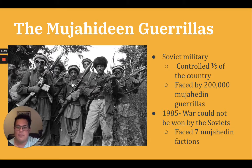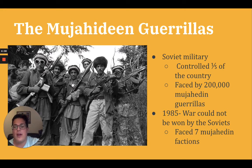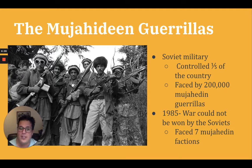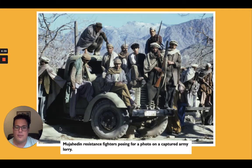The Mujahideen wished to establish an Islamic government for the country, giving rise to guerrilla groups trying to counter Soviet intervention. Faced by up to 2,100 Mujahideen guerrillas, the Soviet military controlled only one-fifth of the country. By 1985, it was clear that the war could not be won by the Soviets, as they faced seven different Mujahideen factions with headquarters in mountainous areas along the border with Pakistan.